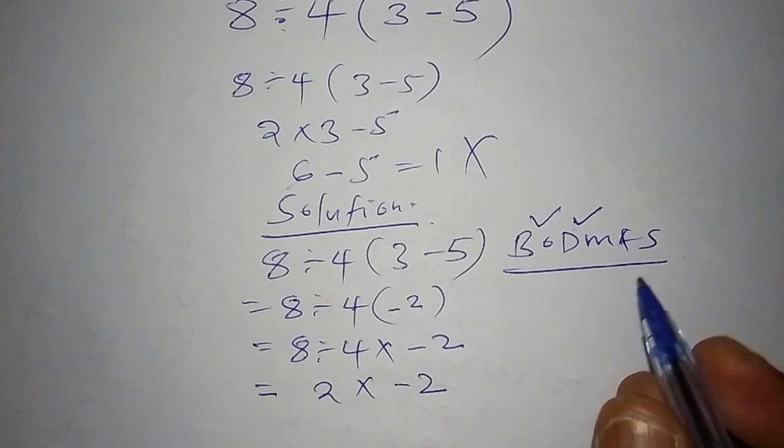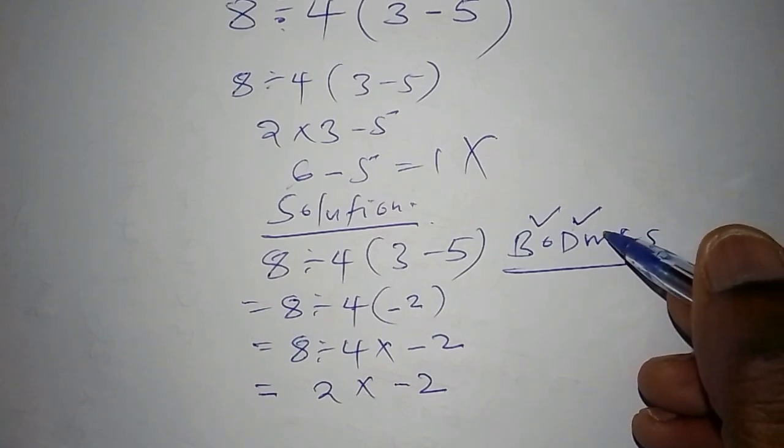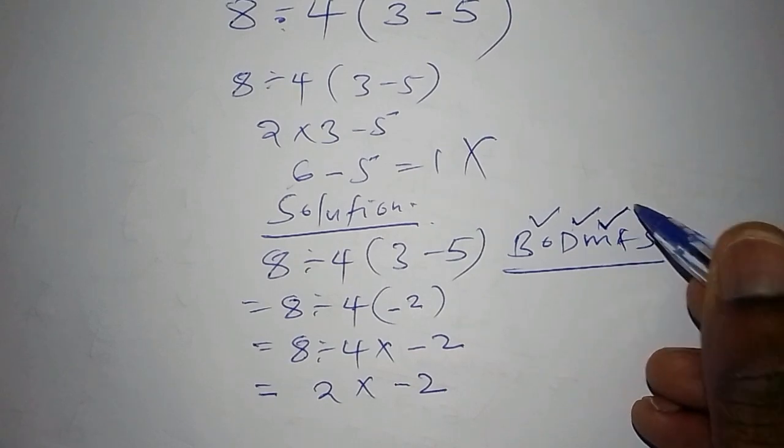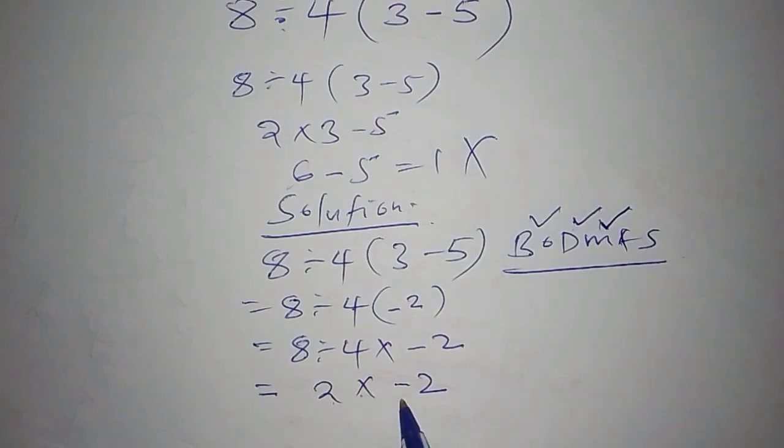The next step now is to work out M, which stands for multiplication. Let's multiply 2 multiply by negative 2. So 2 multiply by negative 2, our final answer now becomes minus 4.